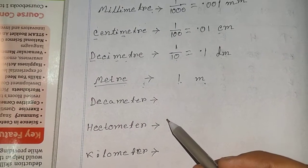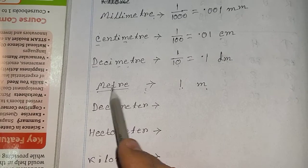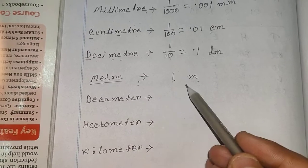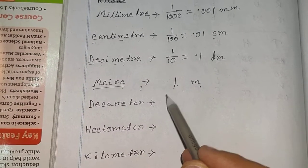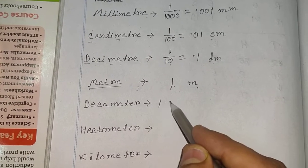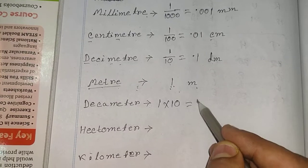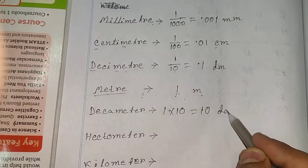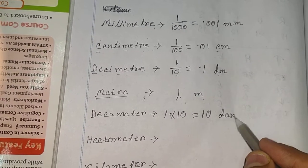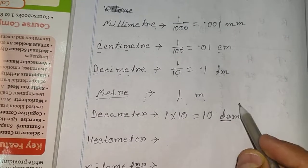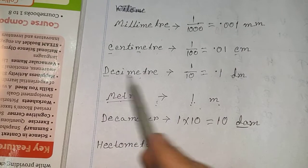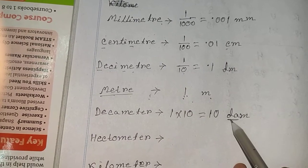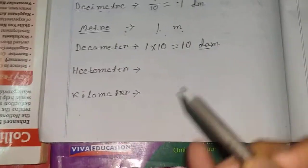Now look here — if we want to measure a large thing, starting from one meter we multiply by 10. That gives 10, and this unit is decameter. The short form for decameter is 'dam' — we use 'da' because 'dm' is already used for decimeter, so we write 'dam' for decameter.